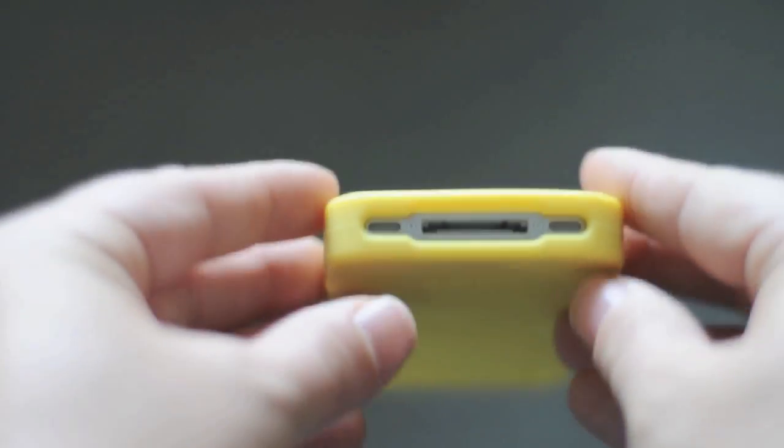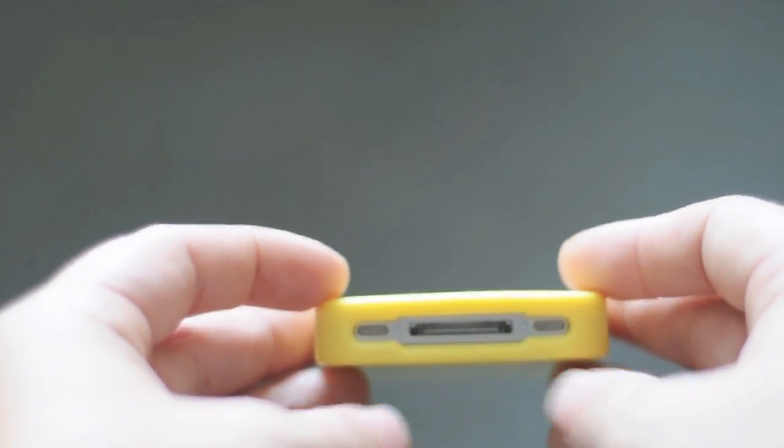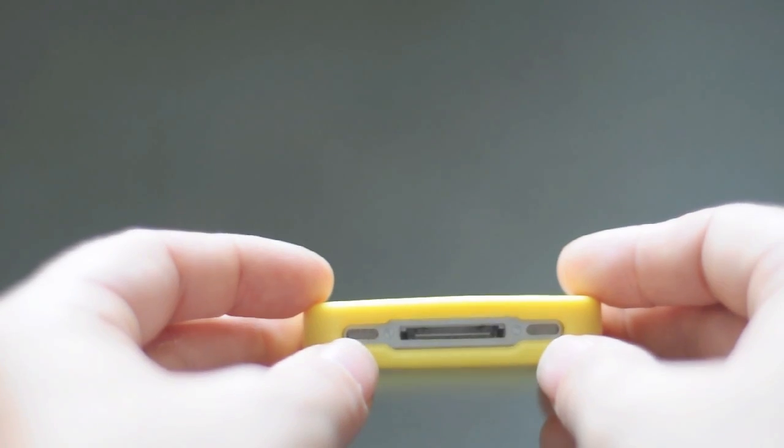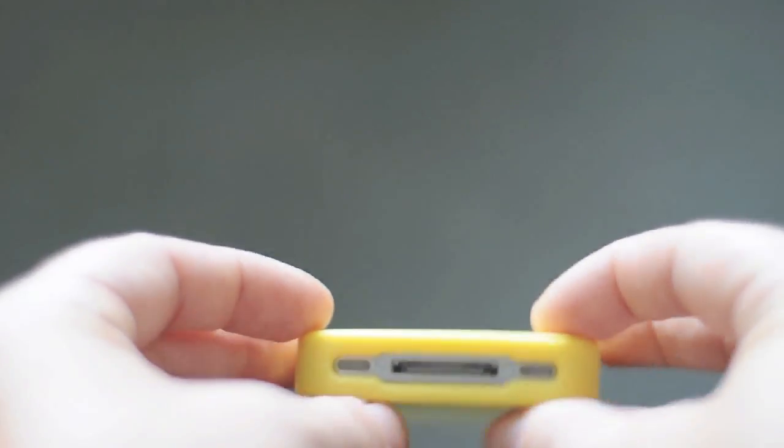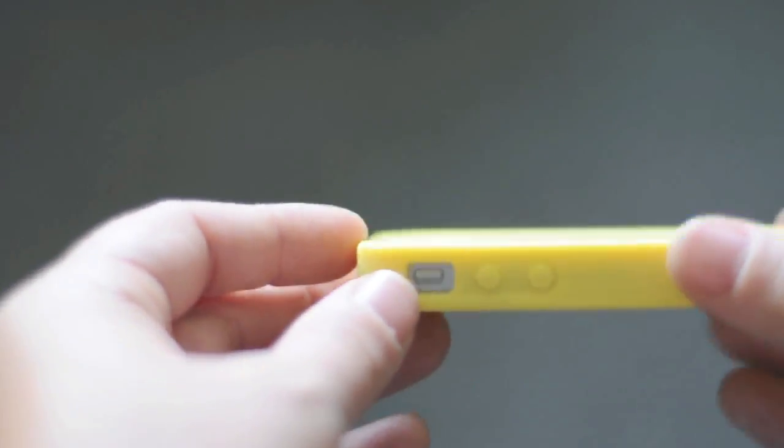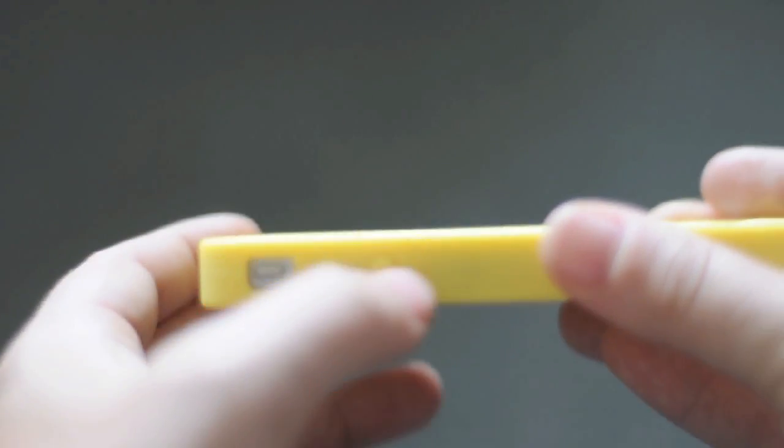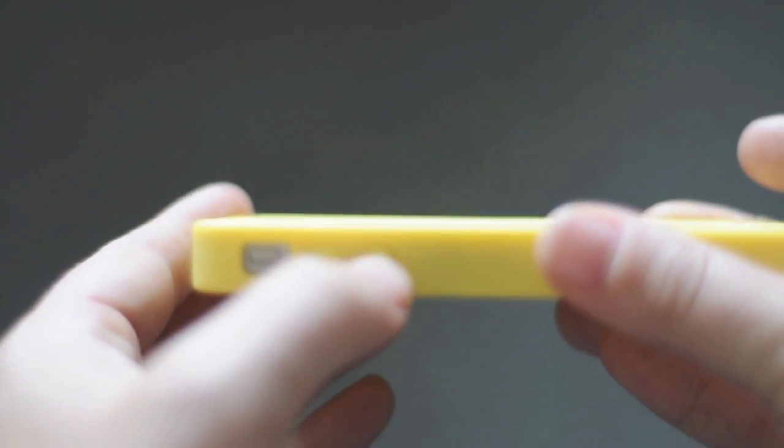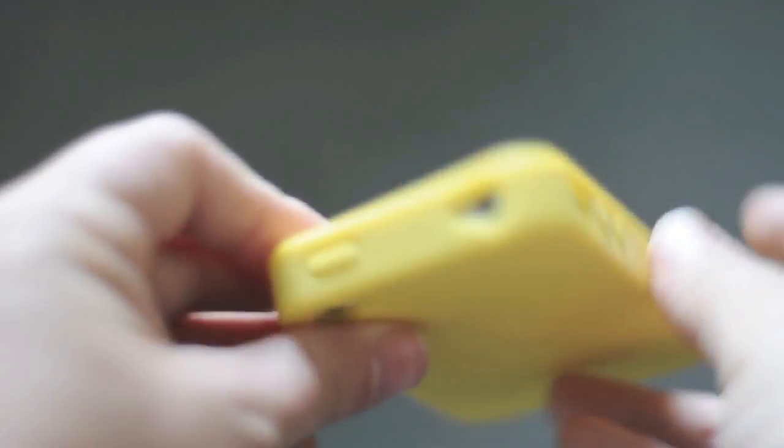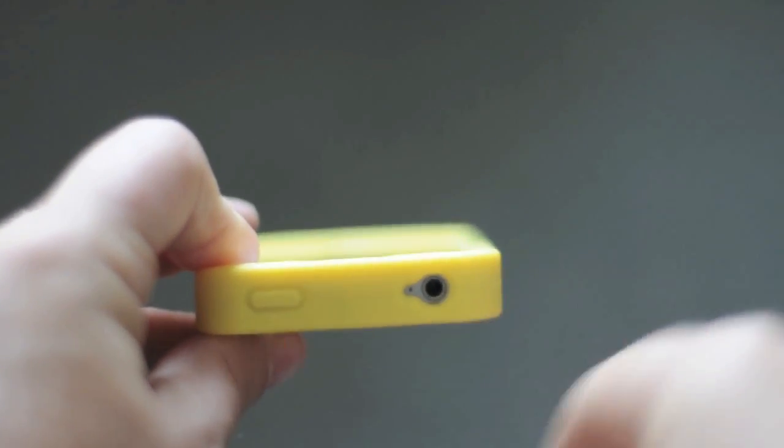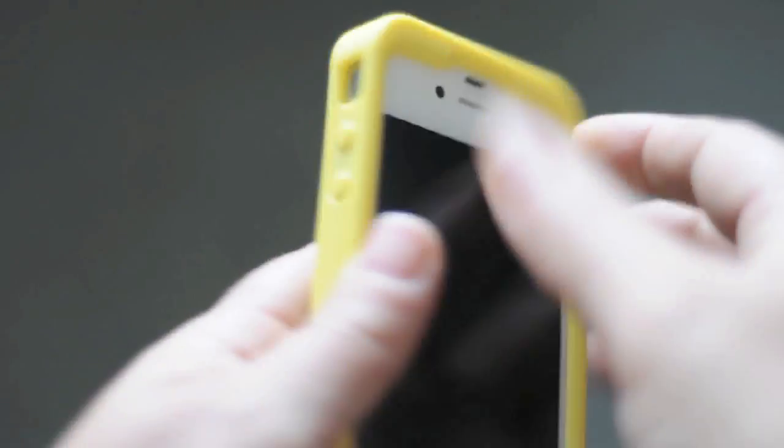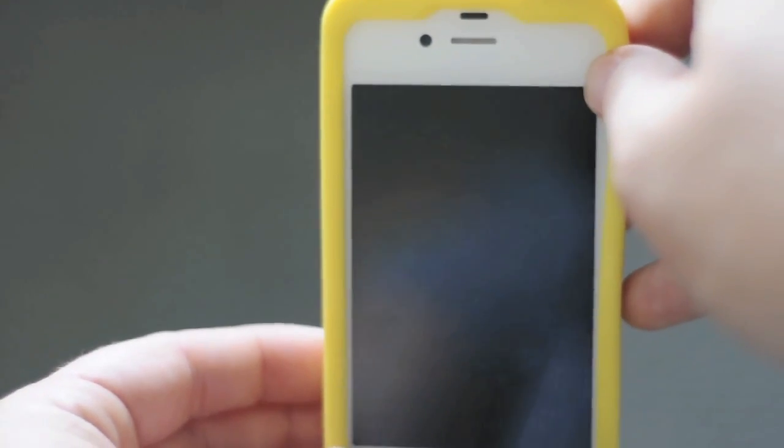On the bottom you get a pretty big cutout for the dock and the mic and the speaker but no problems docking this at all. On the side here your vibrate switch is really easy to access. These buttons are really easy to push and they are covered. On the top another keyhole cutout around the headphone jack and secondary mic and the top button is also covered but really easy to press.